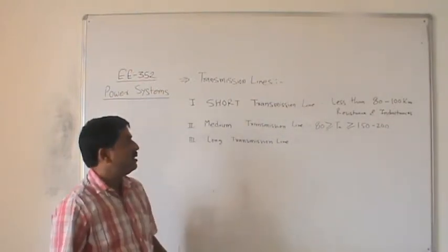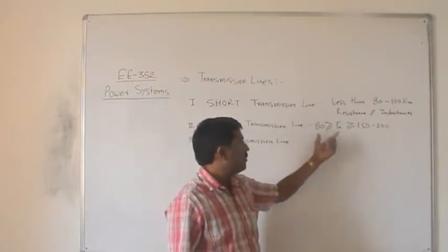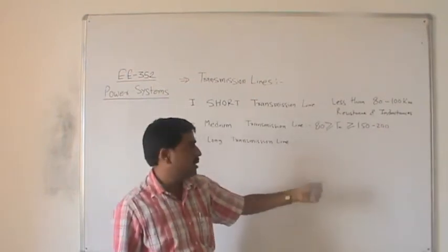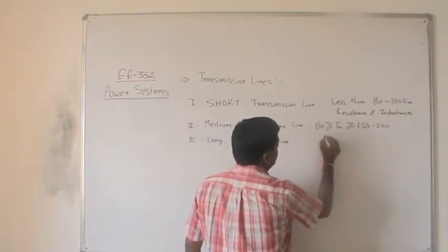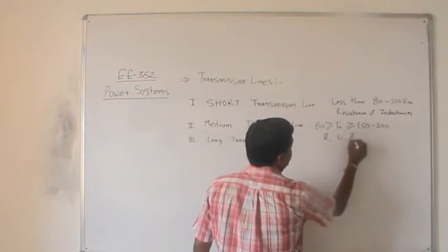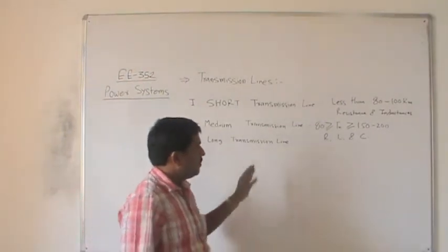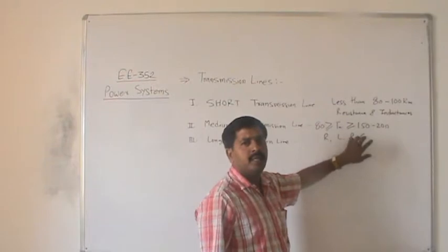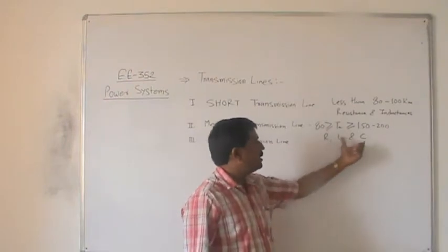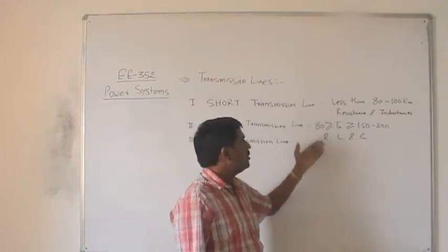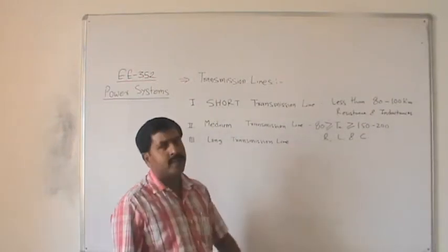For the medium transmission line, the length lies between 80 to 150 or 200 km. For analysis of this type, we consider resistance, inductance, and capacitance. Here we take the capacitor as a lumped parameter, because the line length is not long enough to treat it as distributed.